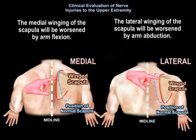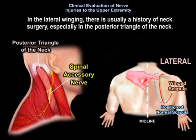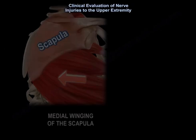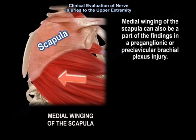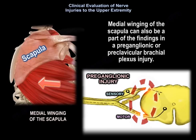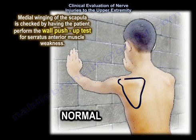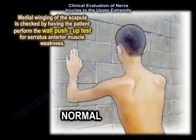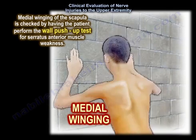Medial winging of the scapula is worsened by arm flexion, while lateral winging is worsened by arm abduction. In lateral winging, there is usually a history of neck surgery, especially in the posterior triangle of the neck. Medial winging can also be part of the findings in a preganglionic or preclavicular brachial plexus injury. It is assessed using the wall push-up test for serratus anterior muscle weakness.